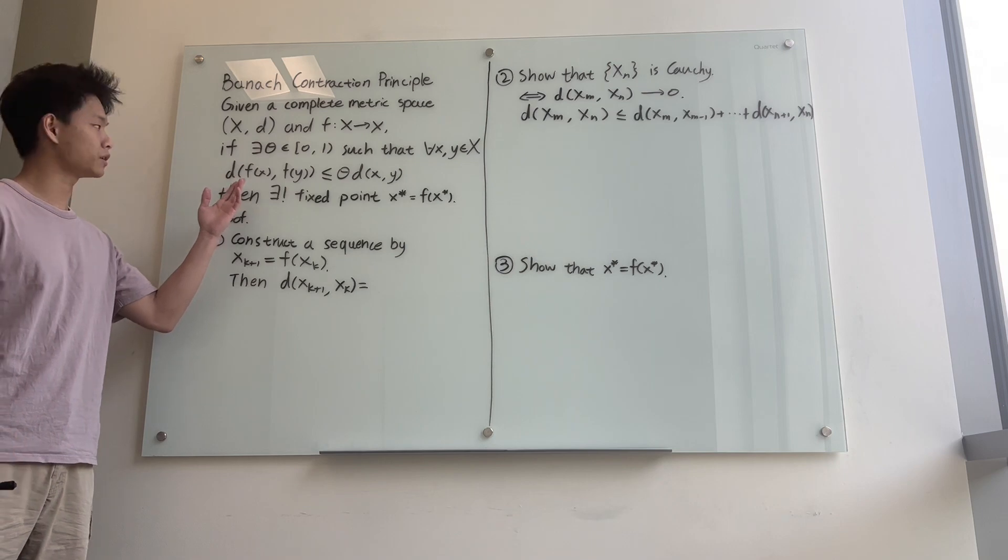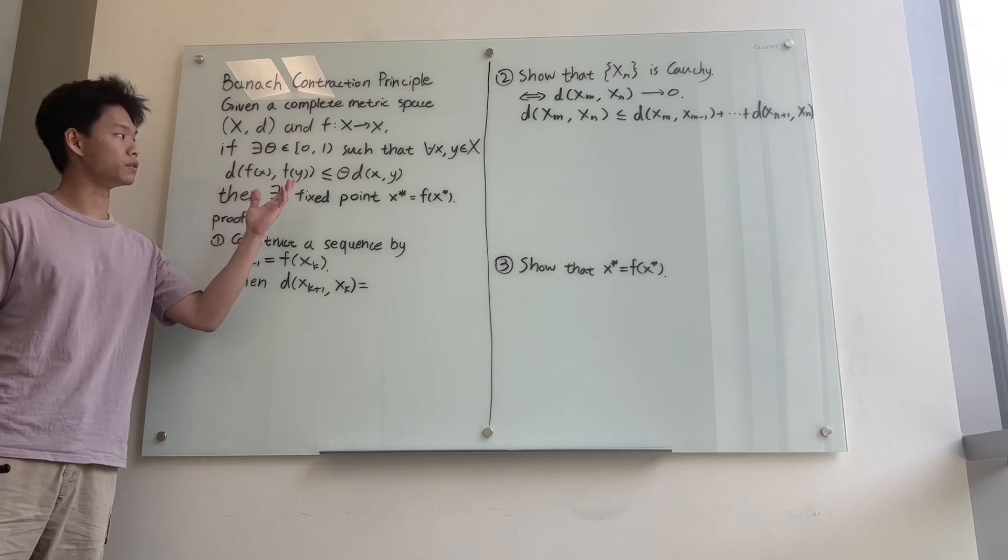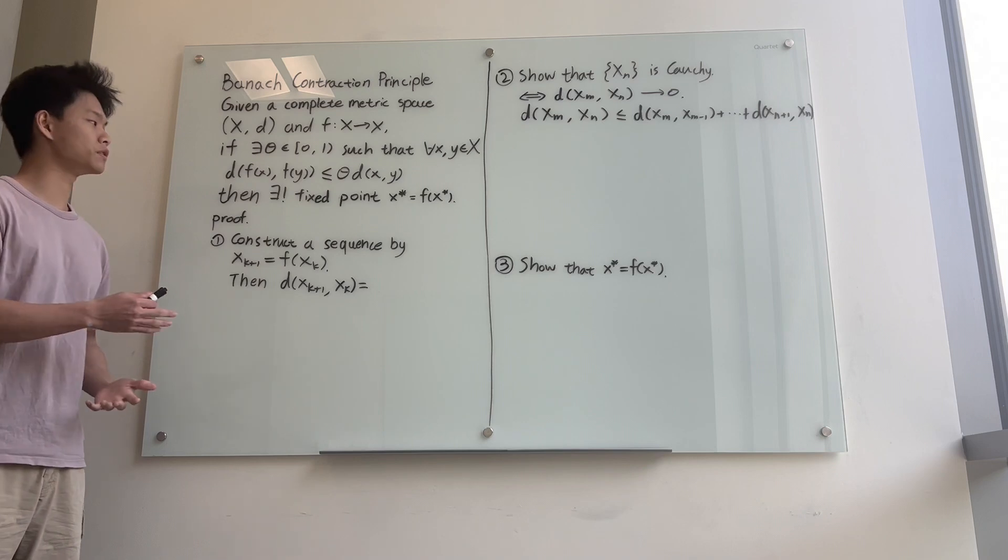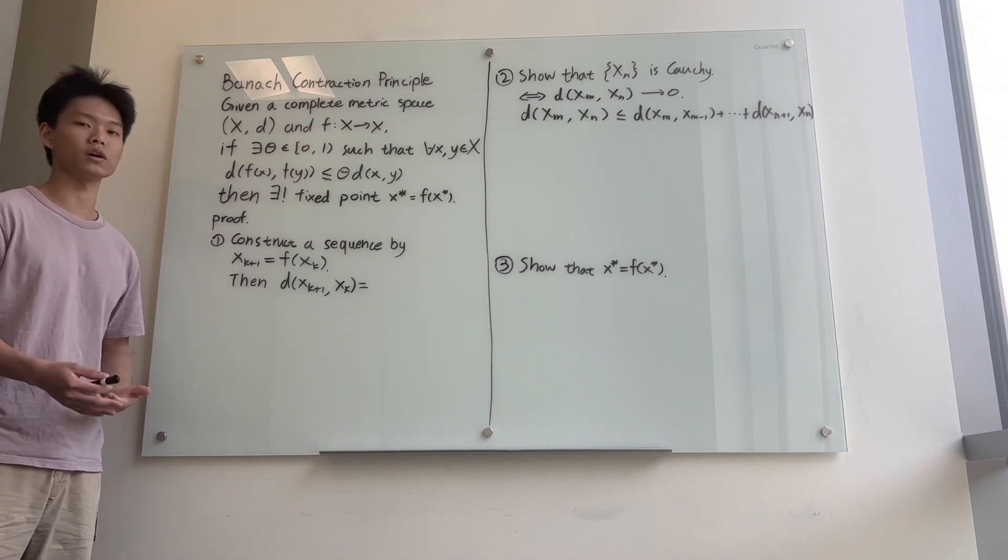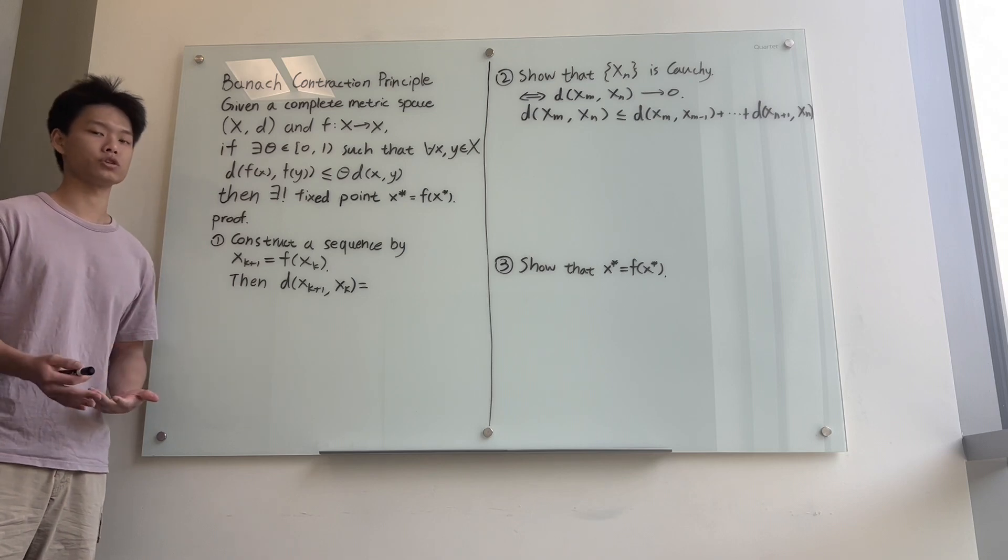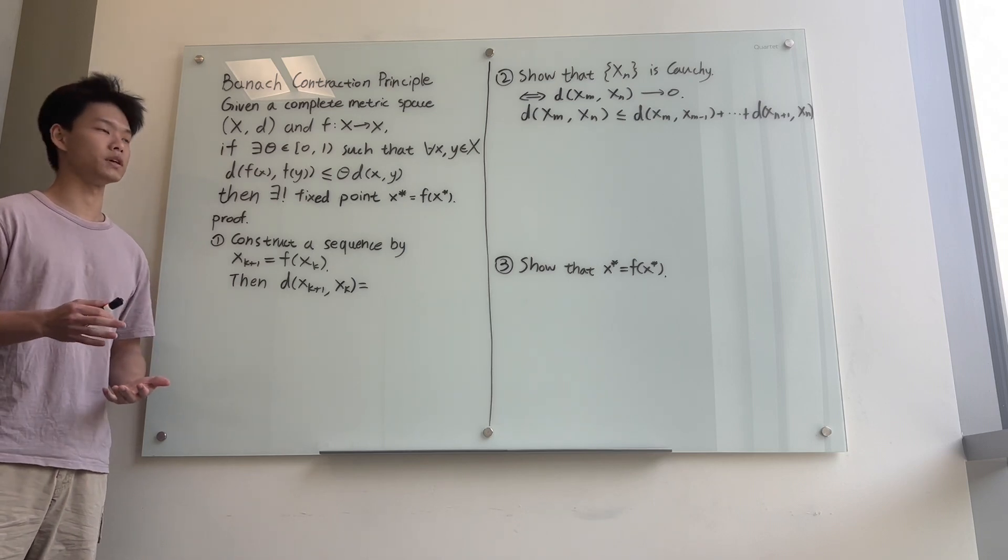the distance between f(x) and f(y) is less than or equal to theta times the distance between x and y, then there exists a unique fixed point x* equal to f(x*). And the uniqueness is very easy to show, so I will just prove the existence in this video.